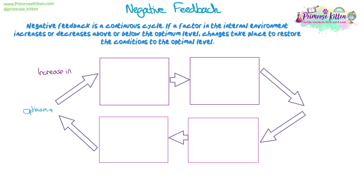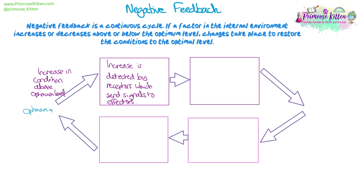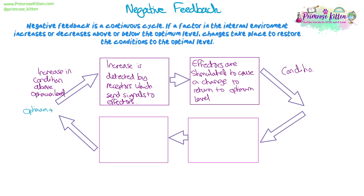Negative feedback is a continuous cycle. If a factor in the internal environment increases or decreases above or below the optimum level, changes take place to restore the conditions to the optimum level. So if a condition increases above the optimum, that increase is going to be detected by receptors - the same mechanism with a receptor, a coordinator, an effector, and a response. The receptors send signals to a coordinator which sends signals to an effector, and the effector brings about a change to decrease that condition back down towards the optimum.